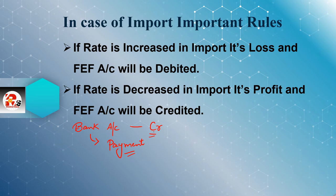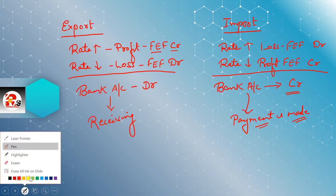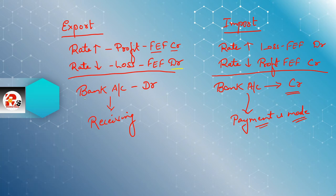Similarly, export में bank account debit होता है, import में हमेशा credit होता है। Export की variety में rate जब बढ़ता है तो profit होता है — FEF account credit। अगर rate कम होता है तो loss होगा — FEF account debit। Bank account export में हमेशा debit होता है क्योंकि हमें पैसे मिलते हैं — we are receiving the cash, इसीलिए bank account debit होता है।